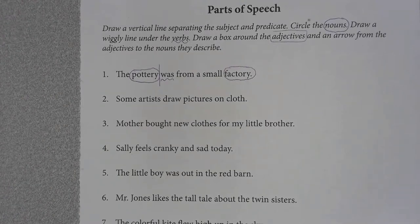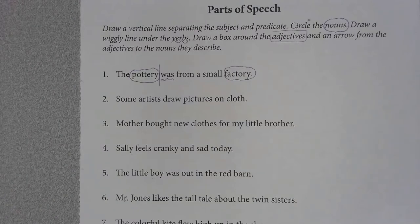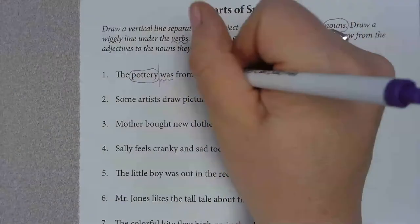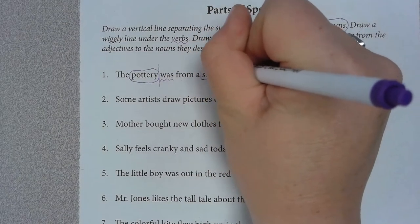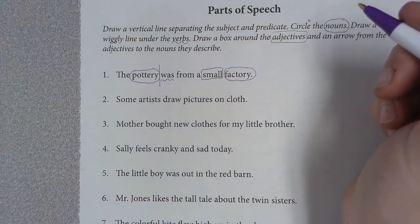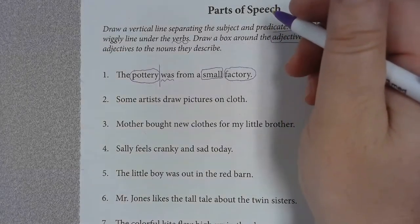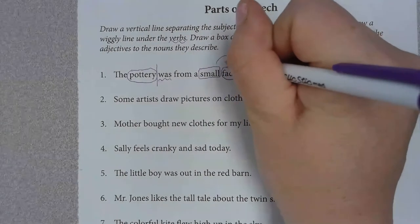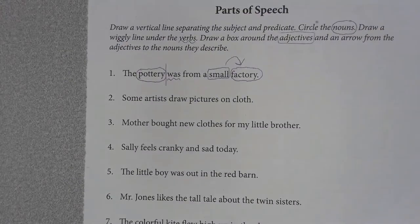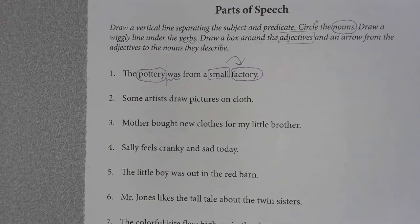Now, the pottery was from a small factory. I'm looking for an adjective. The adjective is what is describing the noun. What word in 'the pottery was from a small factory' is describing the noun? Small. Very good. So I'm going to put a box around 'small,' and then I'm going to draw an arrow from 'small' to 'factory.' What's small describing? Factory. Just like that.